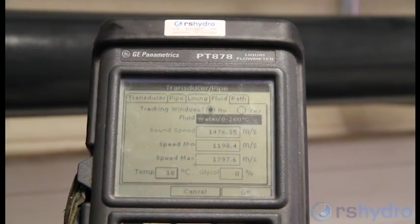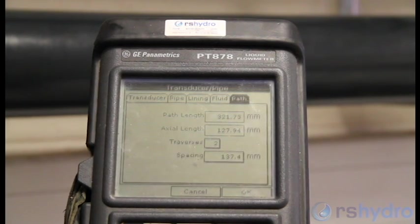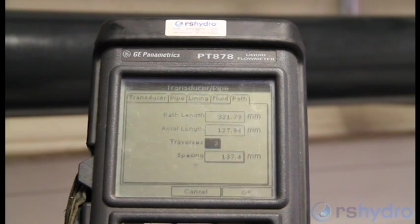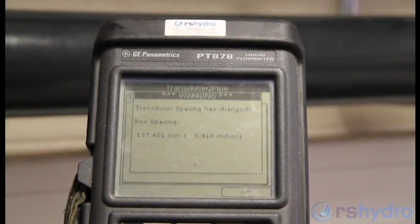Scroll over to the path menu and enter two traverses. The meter will calculate the spacing. Press OK. The meter comes up with a warning saying the transducer spacing has changed, and the new spacing will be 137.4 mil. Press OK to confirm.